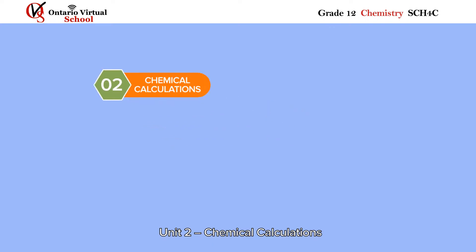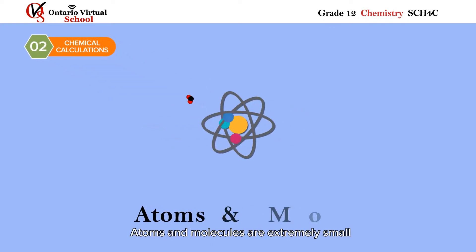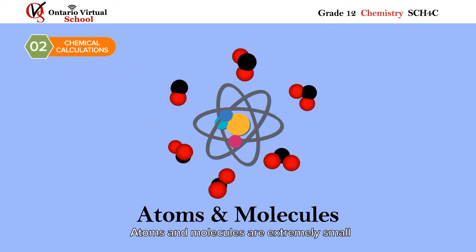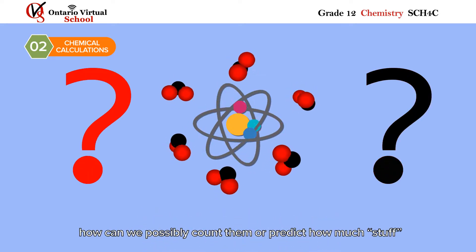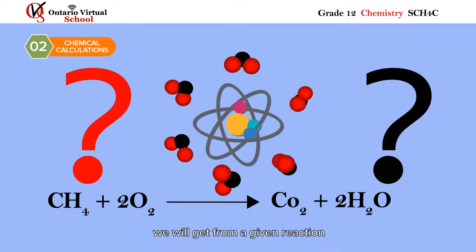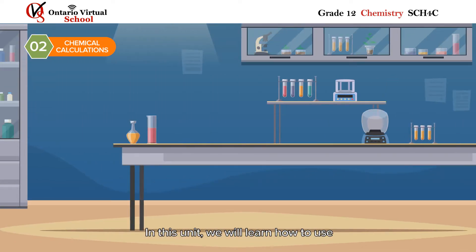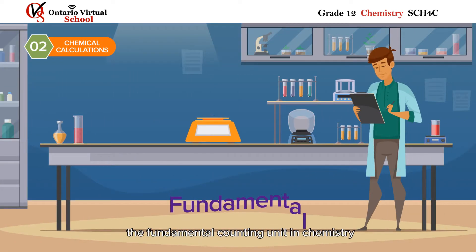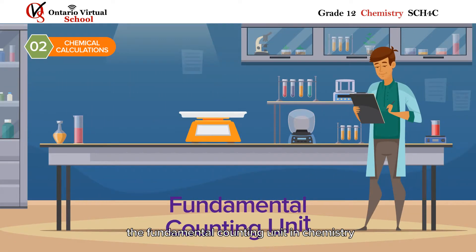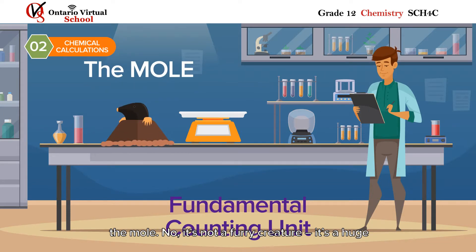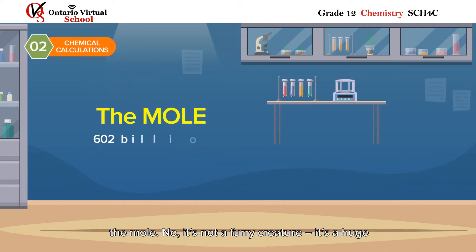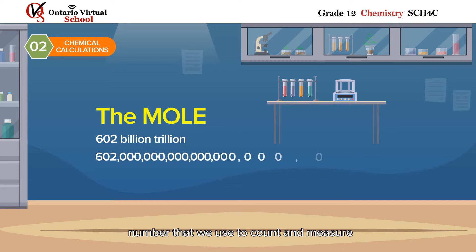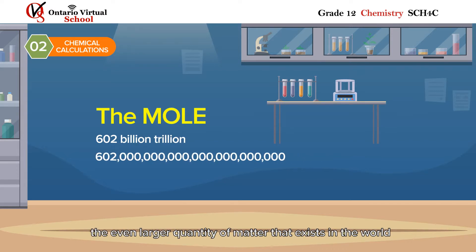Unit two: chemical calculations. Atoms and molecules are extremely small, so how can we possibly count them or predict how much stuff we will get from a given reaction? In this unit we will learn how to use the fundamental accounting unit in chemistry — the mole. No, it's not a furry creature; it's a huge number that we use to account for and measure the even larger quantity of matter that exists in the world.